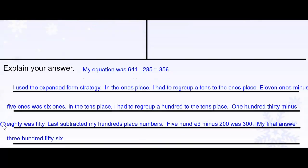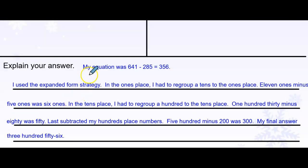And your explanation should look something like this. My equation was 641 minus 285 equals 356. I used the expanded form strategy. In the ones place, I had to regroup a tens to the ones place. So, 11 ones minus 5 ones was 6 ones. In the tens place, I had to regroup a hundred to the tens place. 130 minus 80 was 50. Last, I subtracted my hundreds place numbers. 500 minus 200 was 300. My final answer was 356.